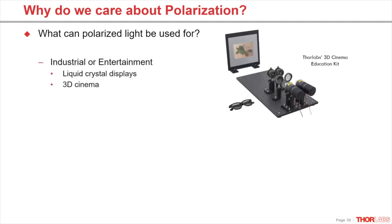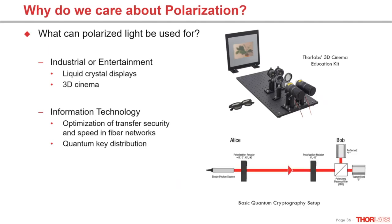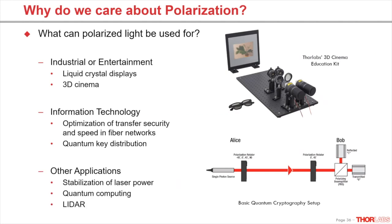A very important application is the area around liquid crystal displays. Using polarizing filters and by rotating the polarization, the pixels on the displays can turn dark or light. There are also entertainment applications using polarization in 3D cinema. In telecom fiber networks, polarization-dependent loss and polarization mode dispersion must be taken care of to optimize transfer security and transfer speed. For quantum cryptography, the key distribution and decryption is performed by separating the polarization states. Other applications can be found in stabilization of laser power and quantum computing. In LiDAR, polarization is used to overcome sensing issues and degraded visibility conditions like fog.